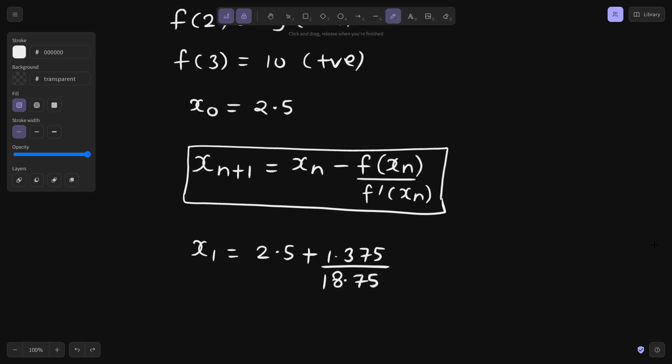Overall value will be 2.5 plus 1.375 divided by 18.75. So this is going to give you 2.57 followed by 3. I am writing till 5 decimal places. So this is 2.57 followed by 3.